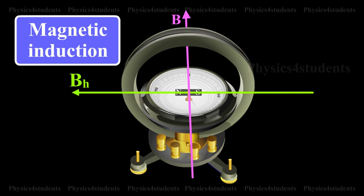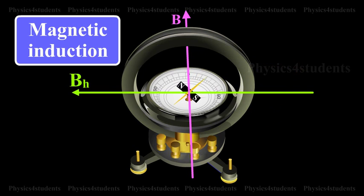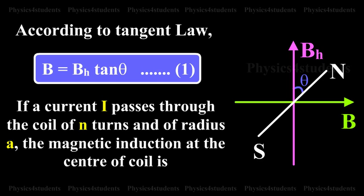Due to these crossed fields, the pivoted magnetic needle is deflected through an angle theta. According to tangent law, B is equal to BH tan theta. This is equation 1.